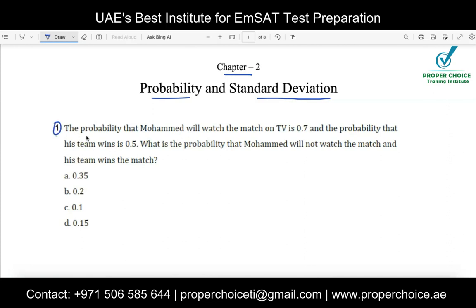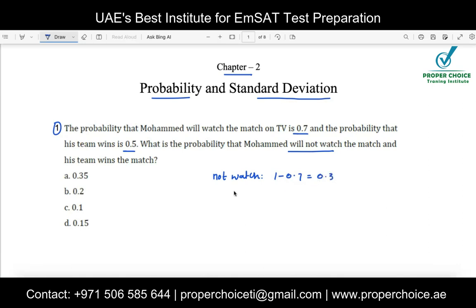Let's start with the first question on probability. The probability that Muhammad will watch the match on TV is 0.7, and the probability that his team wins is 0.5. What is the probability that Muhammad will NOT watch the match and his team wins? The probability of watching is 0.7, so the probability of not watching is 1 minus 0.7, which gives us 0.3.